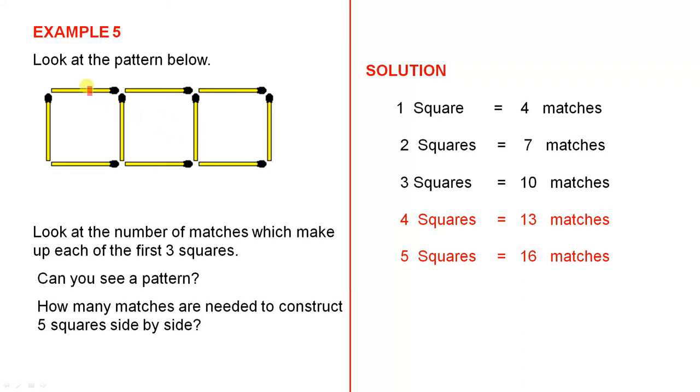Well, for the first square, see this first square here? One, two, three, four, you need four matches, don't you, for that square. How many extra matches do you need for the second square? Another three. One, two, three, because we've already counted that one, so that's an extra three. How many matches do you need to make up the third square? One, two, three, because we've already used that one. Can you see a pattern?